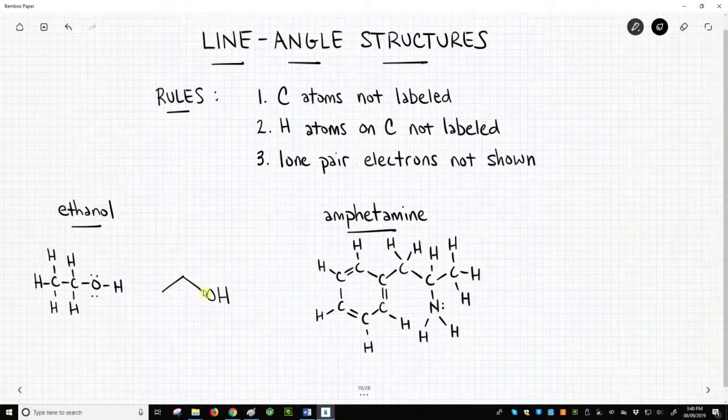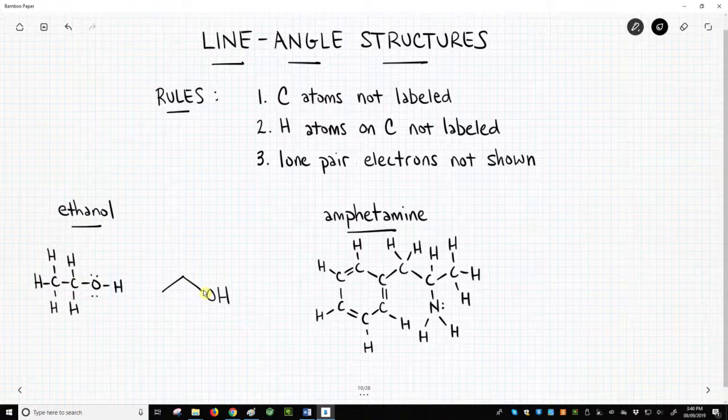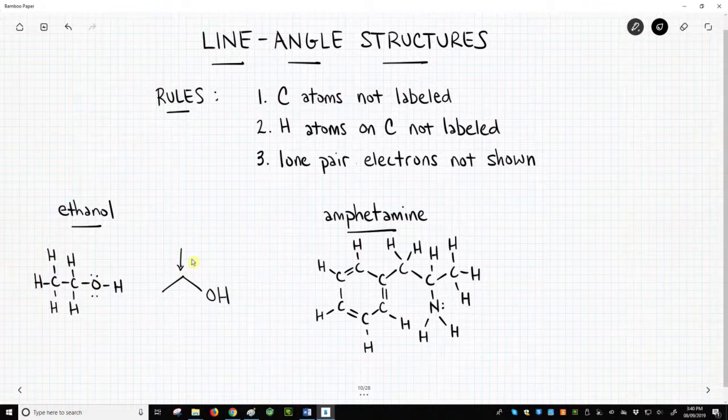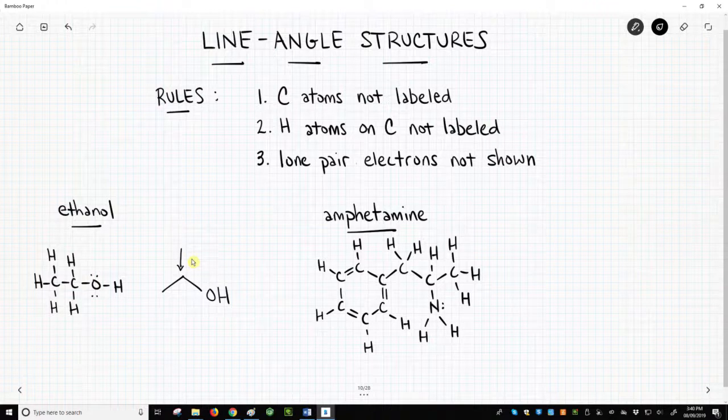The zigzag creates changes in direction that allow you to know where one bond ends and another begins to indicate that there is a carbon in the middle. Without the zigzag, you couldn't tell if there was a carbon between the end carbon and oxygen. Here is a line-angle structure for amphetamine.